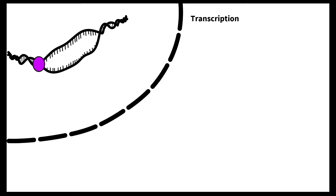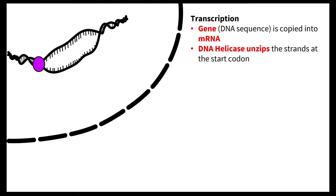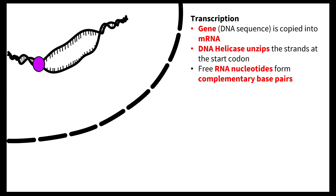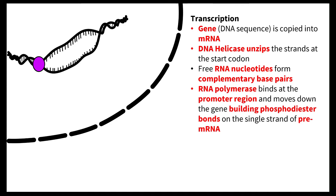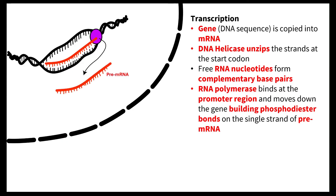Transcription is where we have our gene being copied into mRNA by DNA helicase unzipping the strand, free RNA nucleotides forming complementary base pairs, and RNA polymerase binding to a promoter region and moving down the gene. As it moves down the gene, it builds phosphodiester bonds on the single strand known as our pre-mRNA.